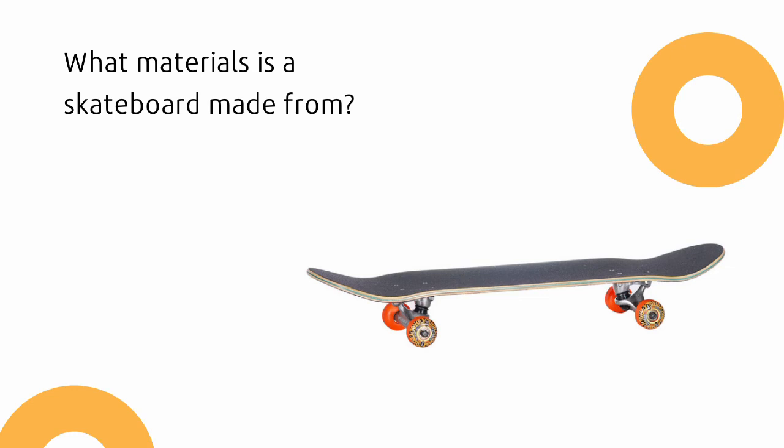What about this skateboard — what is it made from? The board itself is made from wood, the wheels are made from rubber, and the screws are made from metal.